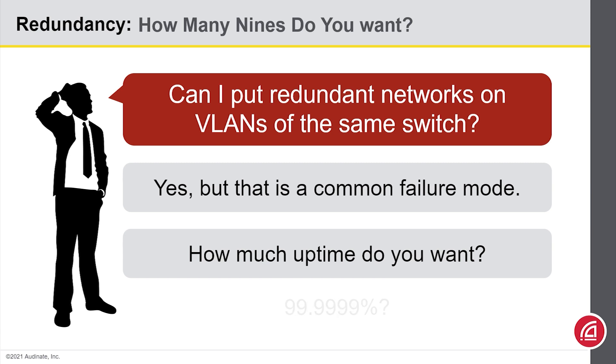99.999? And so on. Each additional nine typically offers logarithmically less benefit, but comes with logarithmically increasing cost.